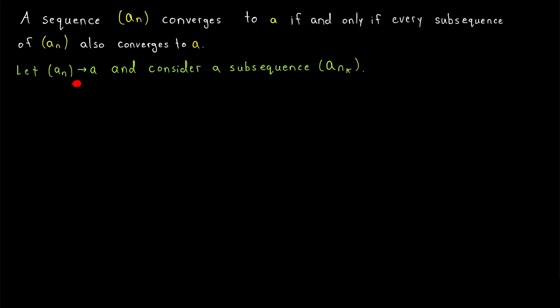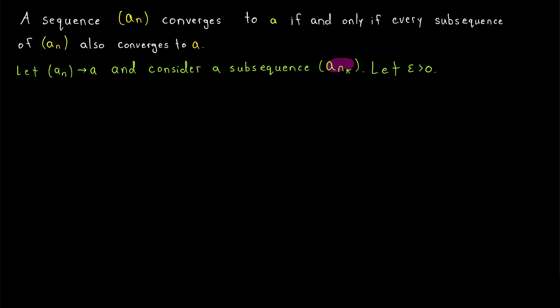First, we'll assume that the sequence aₙ converges to a, and we'll take an arbitrary subsequence aₙₖ. To prove that a sequence converges to some limit, we're going to begin with an epsilon greater than zero. We want to prove that eventually, after a certain point, every term of aₙₖ is within epsilon of the desired limit a.